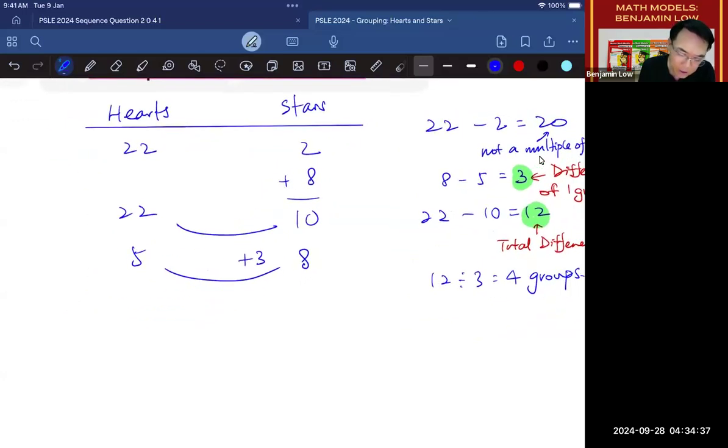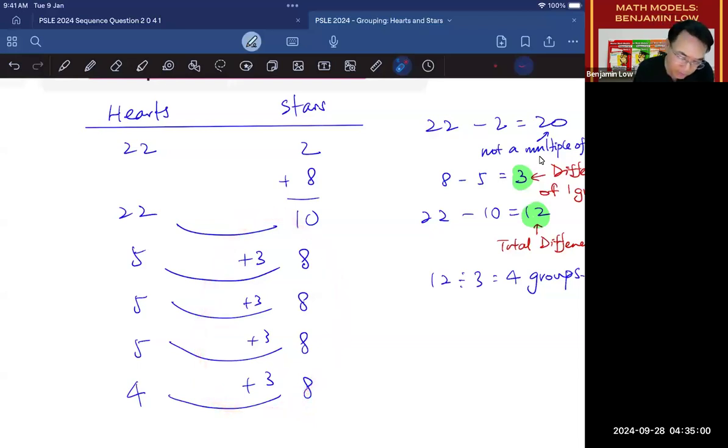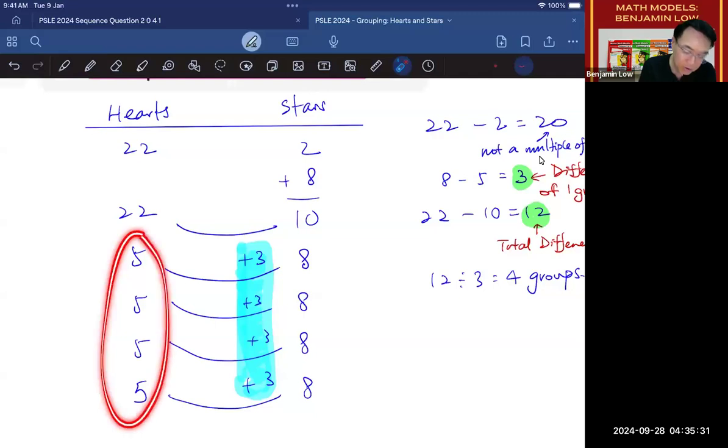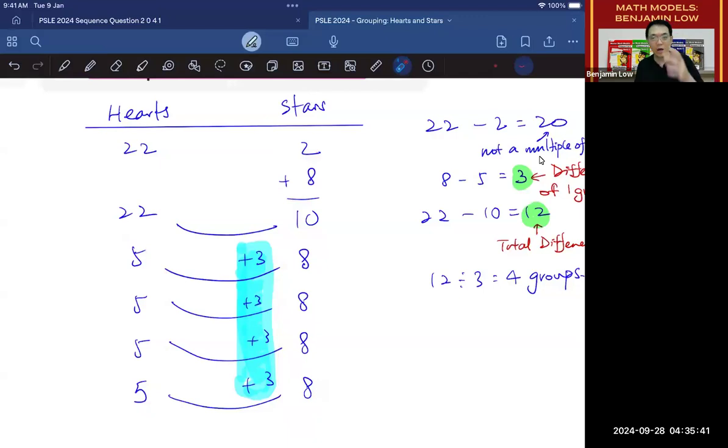Simply put, this represents one group, a second group, a third group, a fourth group. So 4 groups, and the difference is always 3. These numbers add together to form the 12 that we were looking for. And now we know that there are 4 groups and that means I have 4 students who put this, 4 students who put this, plus an additional student who put the 8 stars at first. So in total, how many students do I have?